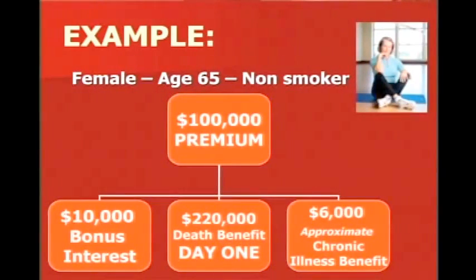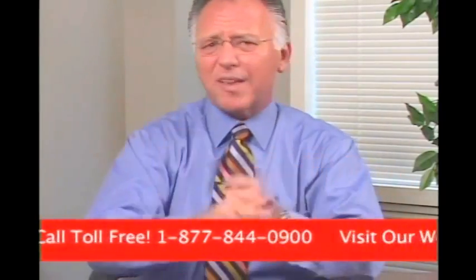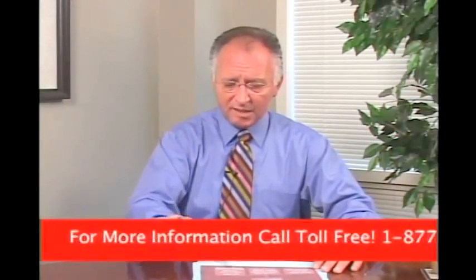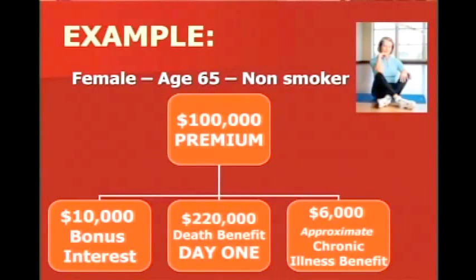One of the other client questions was: what if an emergency comes up and they need their money — what if they get sick? This policy has a chronic illness benefit — not a long-term care rider, but a chronic illness benefit. If your client cannot perform two of the ADLs (activities of daily living), they don't have to be in a nursing home or have home health care. The doctor says they can't do two ADLs, and we start paying approximately $6,000 per month, which can grow, paid over 33 months, leaving at least $25,000 death benefit remaining. So: they give us $100,000, we give them a $10,000 interest bonus, a $220,000 tax-free death benefit on day one, and a $6,000/month chronic illness benefit over 33 months.